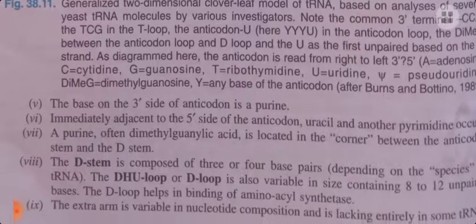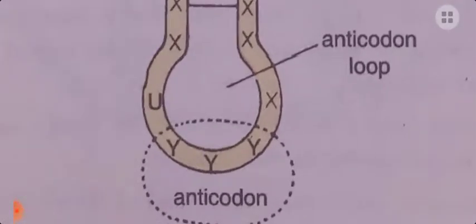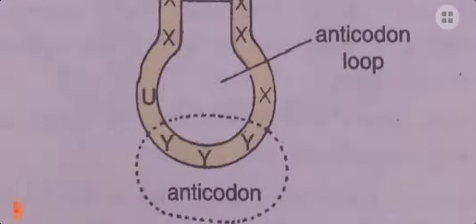The fifth feature is that the base on the 3' side of the anticodon is a purine — either adenine or guanine. Immediately adjacent to the 5' side of the anticodon, a uracil and another pyrimidine occurs.